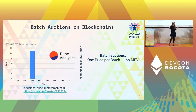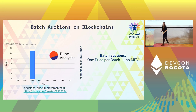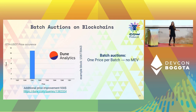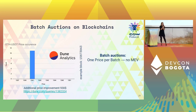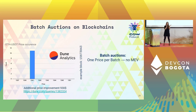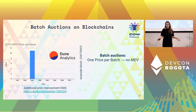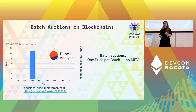Looking back at that block with eleven different traders getting eight different clearing prices — what would happen if we batched them all together and gave them a single unique clearing price? We'd actually be able to offer better prices because we wouldn't be moving the price curve up and down repeatedly. In that concrete example, we could additionally pay out $930 to users. But the real benefit is that with a single clearing price, you don't expose those trades to MEV at all.